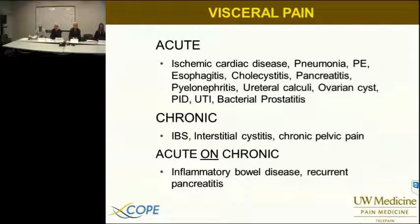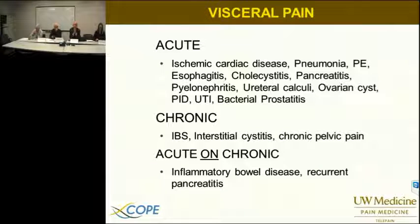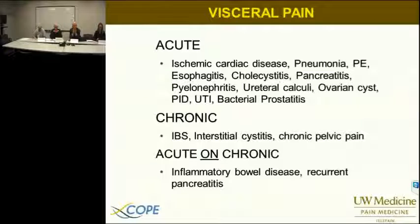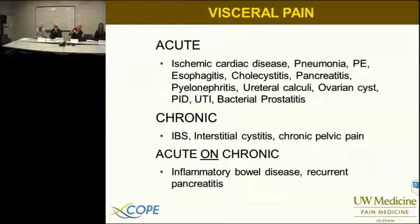Acute visceral pain syndromes include ischemic cardiac disease, pneumonia, and pulmonary emboli — basically disease or injury to one of the visceral structures. Chronic visceral pain includes irritable bowel syndrome, interstitial cystitis, and chronic pelvic pain — common visceral syndromes we encounter in ordinary practice. There's also acute-on-chronic, meaning the process is chronic but the active disease state appears periodically, like inflammatory bowel disease or recurrent pancreatitis. One would expect acute-on-chronic to produce central nervous system windup, leaving a neuropathic central sensitization phenomenon, with acute nociceptive activity superimposed on that process.